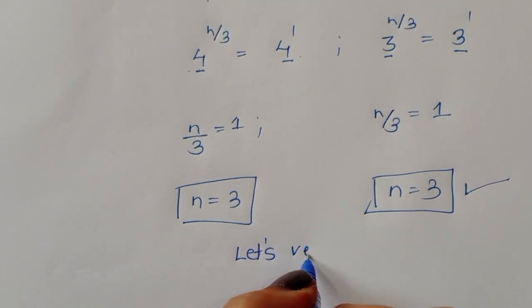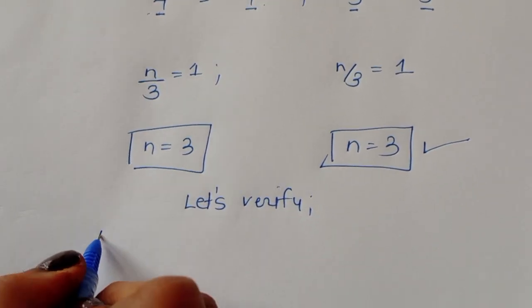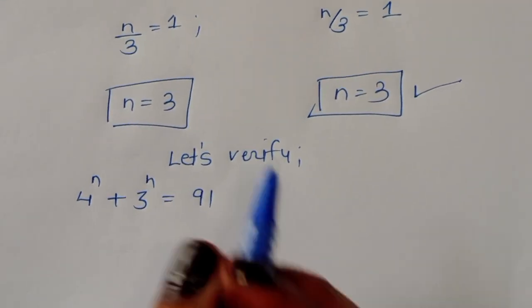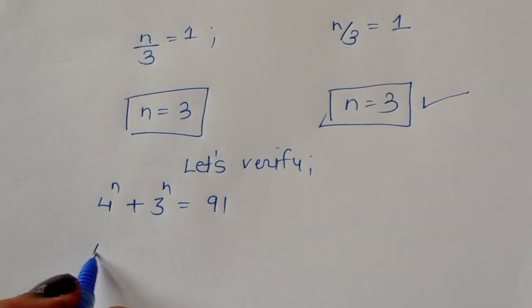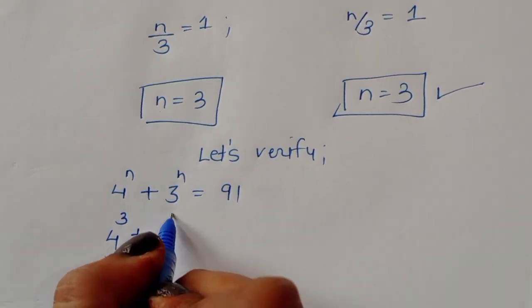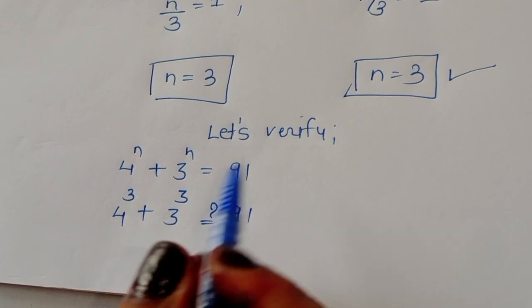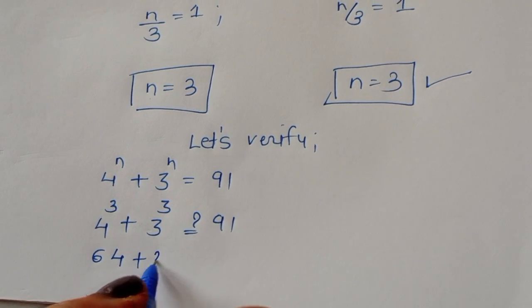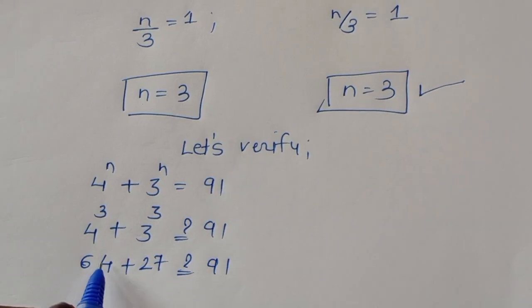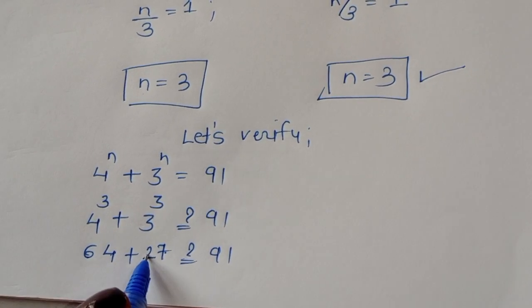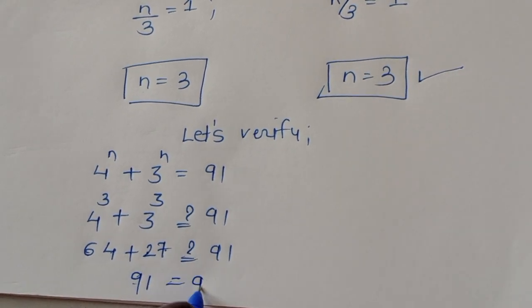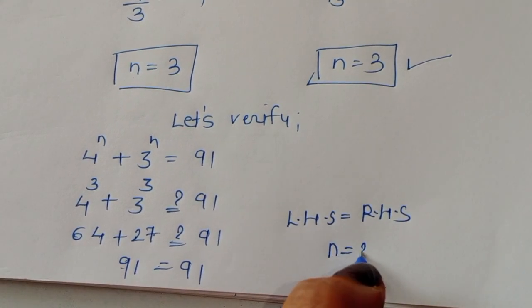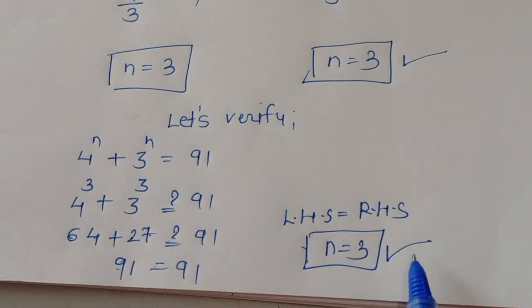Let's verify: 4^n + 3^n = 91 with n = 3. So 4³ + 3³ = 64 + 27 = 91. LHS = RHS. The value of n = 3 is confirmed as the correct solution.